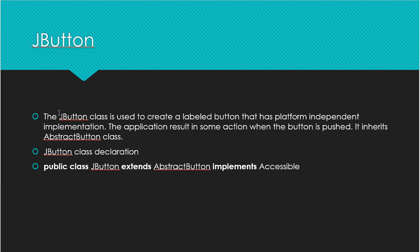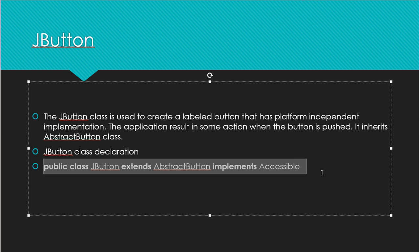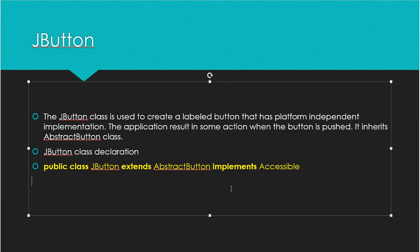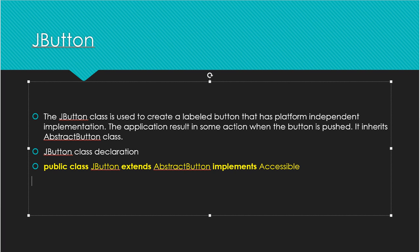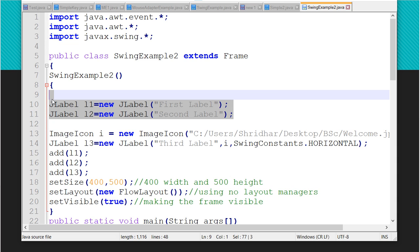Now let's look at JButton. JButton class is used to create a labeled button with a platform-independent implementation. It inherits from AbstractButton class. The application performs some action when the button is pushed. The class declaration is: public class JButton extends AbstractButton implements Accessible.